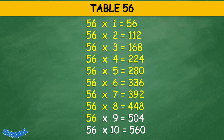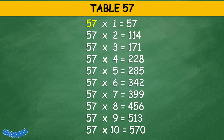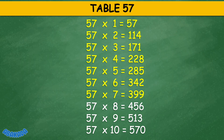Table 57: 57 times 1 equals 57, 57 times 2 equals 140, 57 times 7 equals 299, 57 times 8 equals 456, 57 times 9 equals 513, 57 times 10 equals 517.